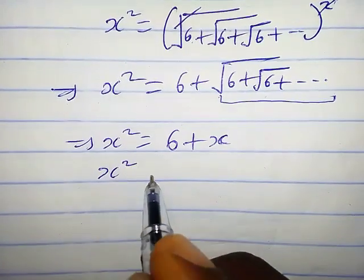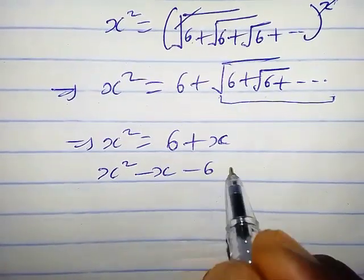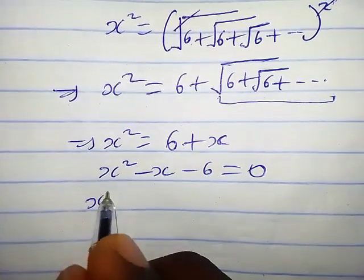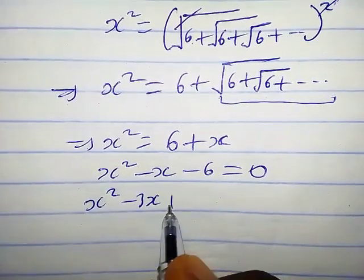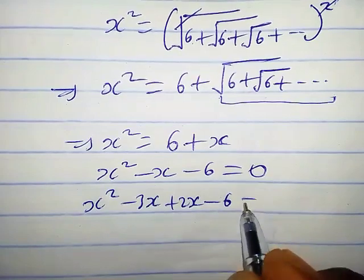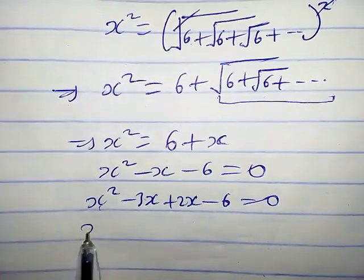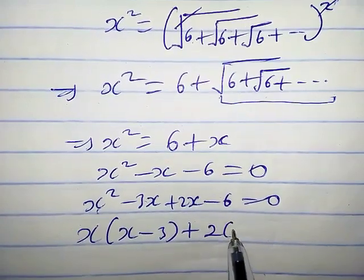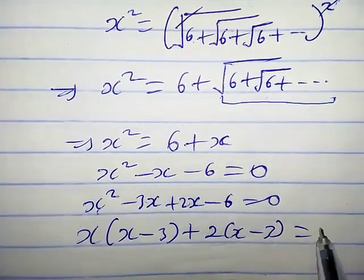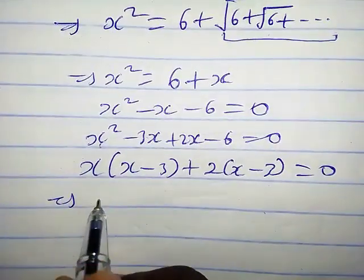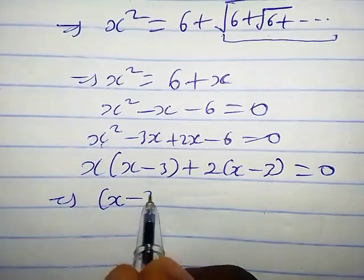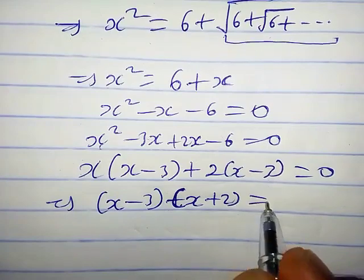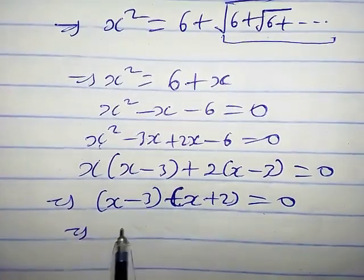Writing this equation, we have x squared minus x minus 6 equals 0. Let's factorize this quadratic: x squared minus 3x plus 2x minus 6 equals 0. Factoring, x(x minus 3) plus 2(x minus 3) equals 0, so (x minus 3)(x plus 2) equals 0.